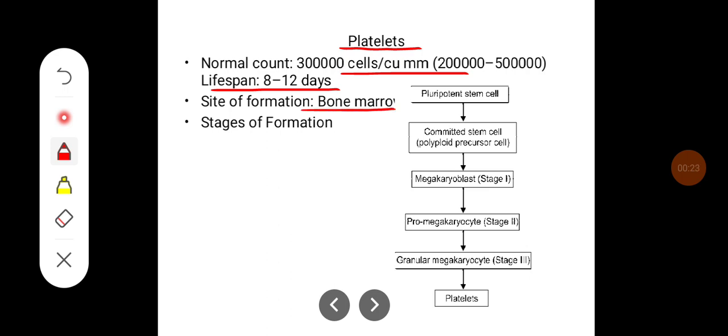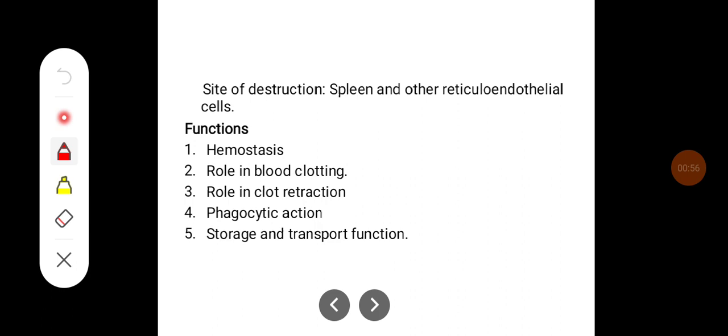The site of formation is bone marrow. Platelets are derived from pluripotent stem cells, which get converted into committed stem cells. The platelet series progresses through megakaryoblast, then pro-megakaryocyte, then granular megakaryocyte, leading to platelets. One megakaryocyte can give rise to 3000 platelets by fragmentation.